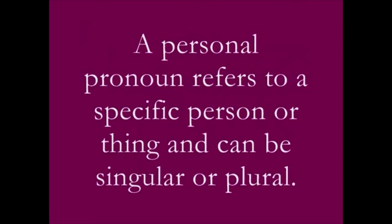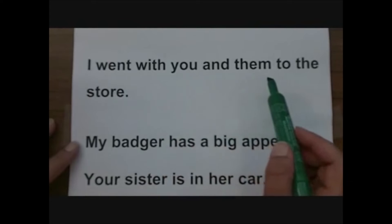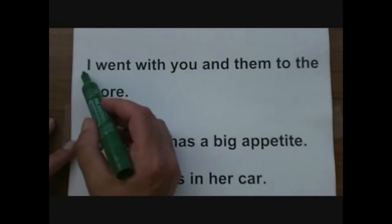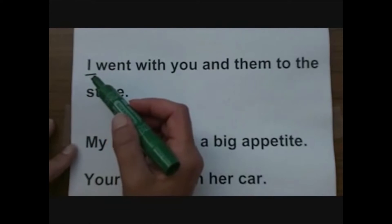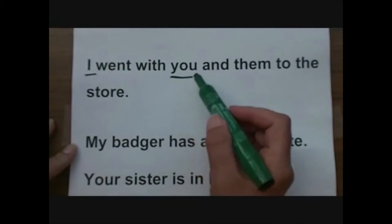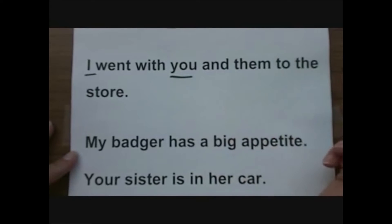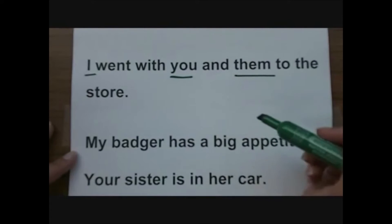Let's talk about the first one. A personal pronoun refers to a specific person or thing and can be singular or plural. For example: 'I went with you and them to the store.' Here, 'I' is a first person pronoun referring to the speaker, 'you' is a second person pronoun referring to the person listening, and 'them' is a third person pronoun referring to other people not present in the conversation.